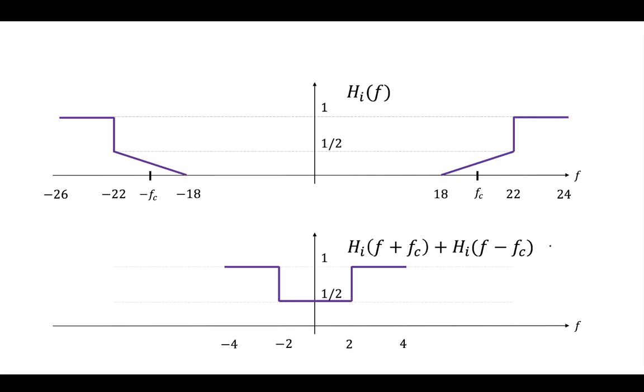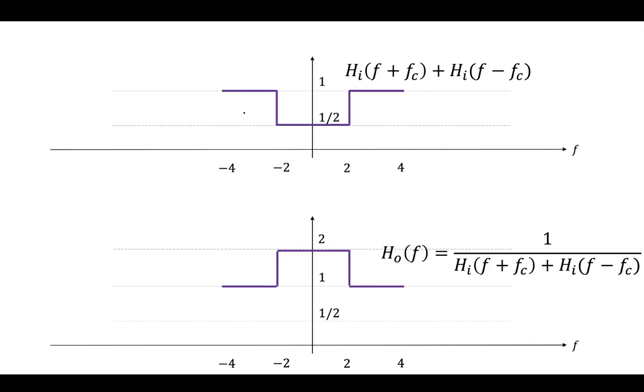So how do these relate? We need to know how to define our output filter. So how does the output filter and this shifted input filter relate? Well, we have the sum of these, and we know that the output filter is defined as 1 over that sum.